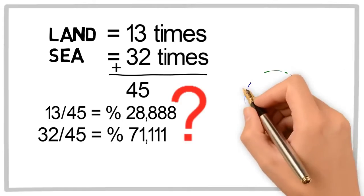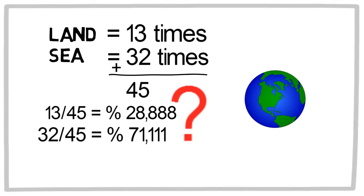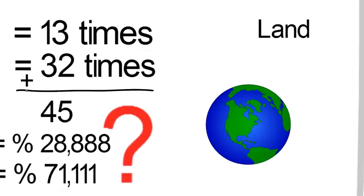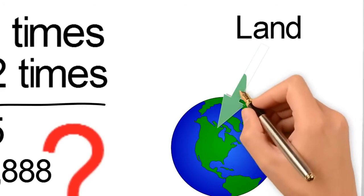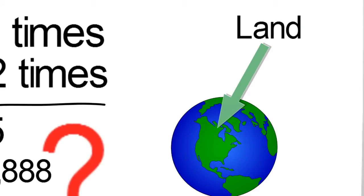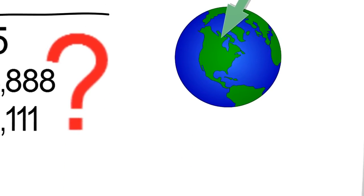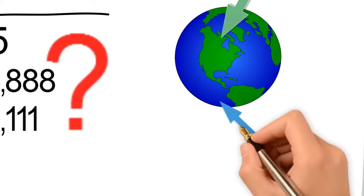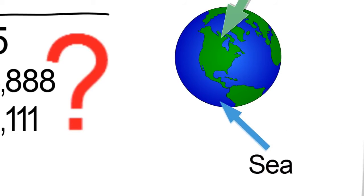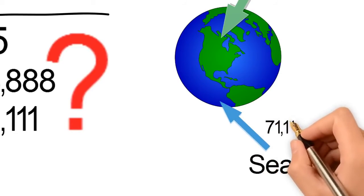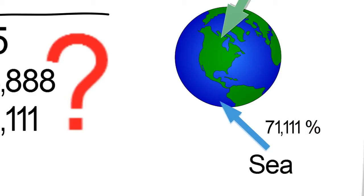Do you have any idea what those percentages represent? Well I'll tell you, those numbers show that all the lands all over the world on the earth occupy 28.88 percent of the whole earth, and all the seas, oceans, rivers, all the water occupies 71.11 percent of the whole earth.